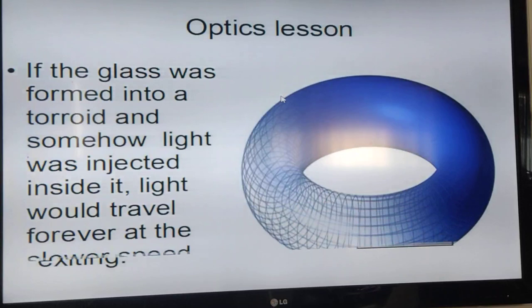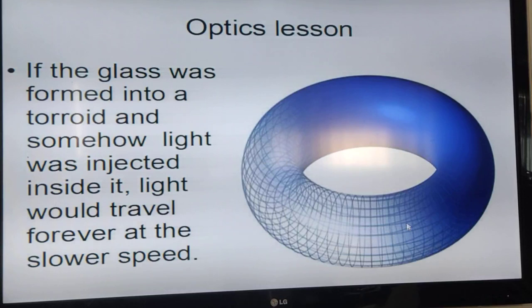If somehow the glass could be made into a curve, a round object, a toroidal shape, and we could inject light into it using fiber optics, then what would happen is light comes in, slows down, stays slow, and keeps going in circles at a slower speed constantly. This will come in handy later.